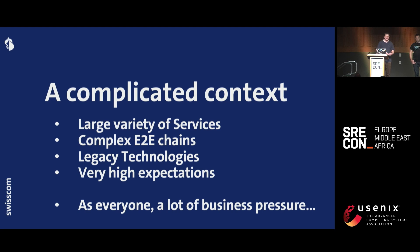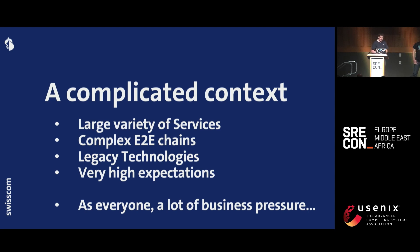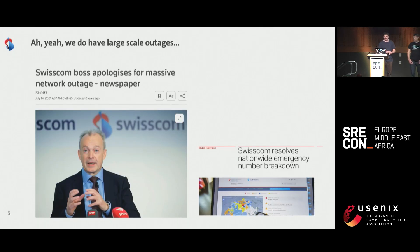We have a large variety of services; something like the emergency call is built on top of everything. We have very complex end-to-end chains, many legacy technologies combined with very modern technology. There are very high expectations — something like emergency calling — and the problem is that it's on top of everything. The high expectation in terms of SLOs cascades down the chain and puts everyone under a lot of business pressure. 2021 was a quite bad year for us. We had many big outages, landing in the press — not serving emergency calls for six hours, for example. That triggered a program to refocus on reliability internally in our company, and that's where these REPs come out.